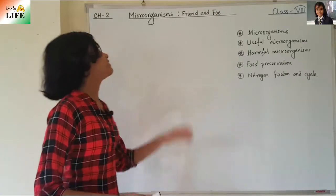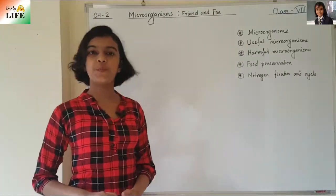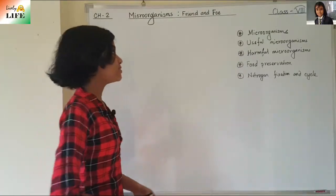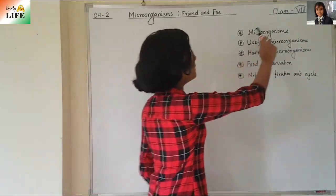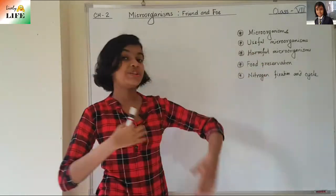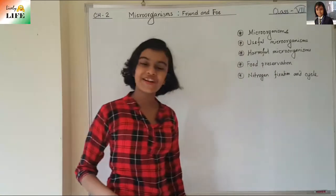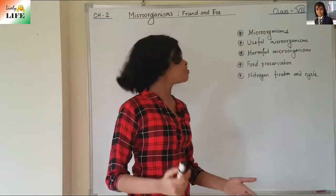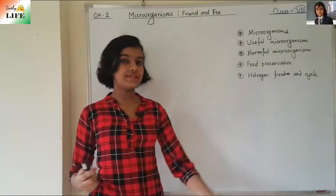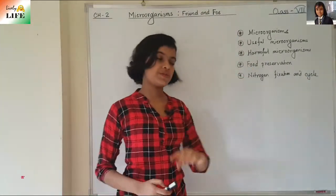This is Chapter 2 of Science: Microorganisms, Friend and Foe. The topics we are going to cover in this chapter are microorganisms, useful microorganisms and how they are useful to us, harmful microorganisms, food preservation, nitrogen fixation, and nitrogen cycle.